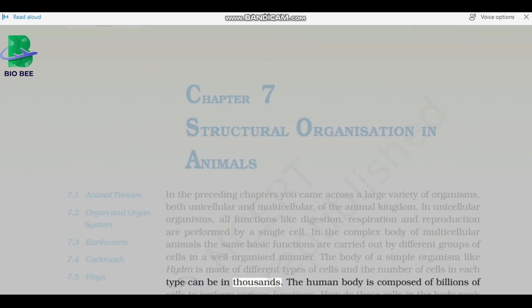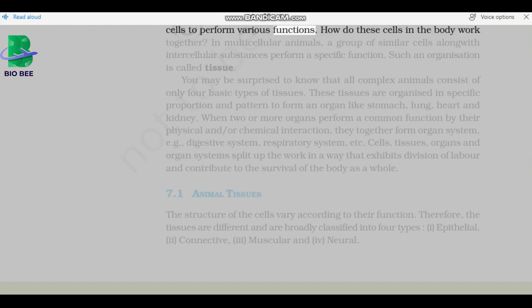The human body is composed of billions of cells to perform various functions. How do these cells in the body work together? In multicellular animals, a group of similar cells along with intercellular substances perform a specific function. Such an organization is called tissue.